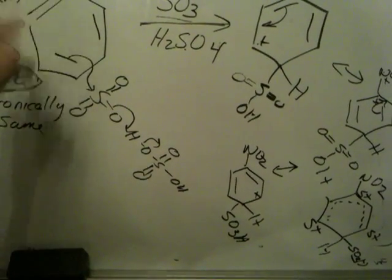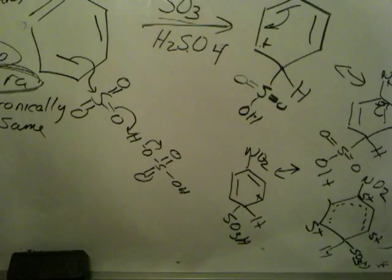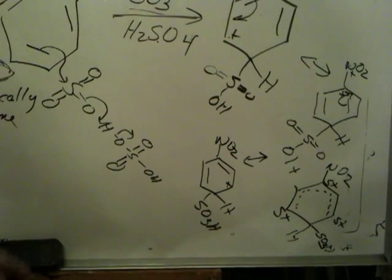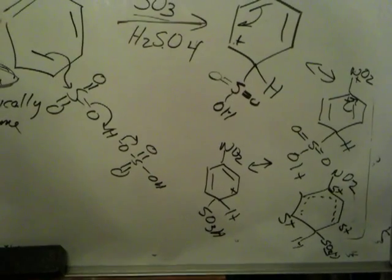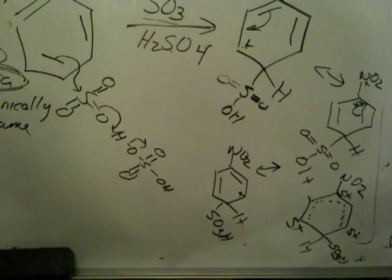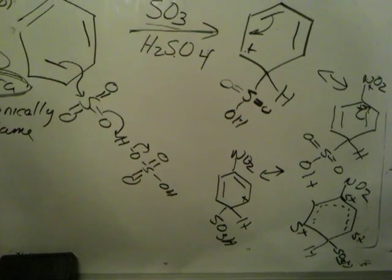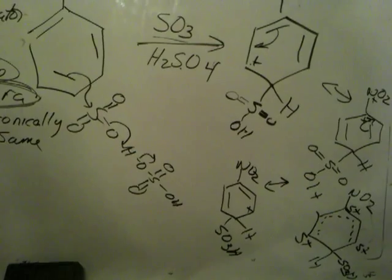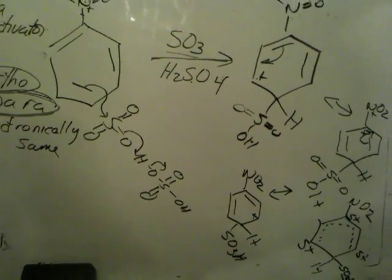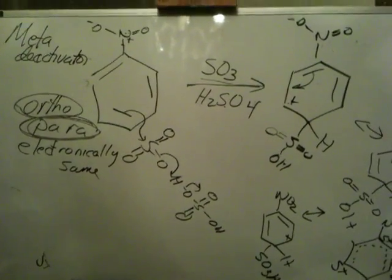What you want to do is compare that intermediate to the intermediate we got for the meta. When we have an electron withdrawing group, the intermediate for the meta is like the lesser of two evils because it avoids that spot. And what we're saying is that intermediate is lower in energy, and that intermediate is a good model for the transition state, and then what we're saying is that it is formed faster. So compare that to what we did last night. Thank you. I'll see you in class tomorrow.